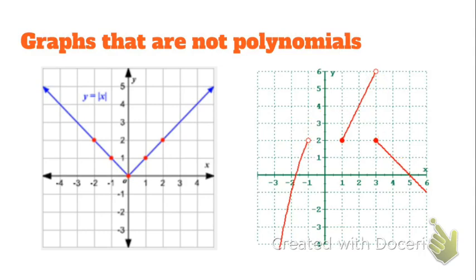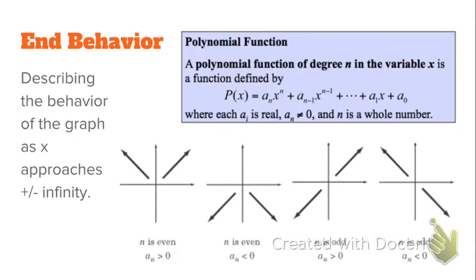We'll look at those more later, but now we want to look at what polynomials are. So first, when we're given an equation, the first thing we want to know is the end behavior. Over in the blue box on the right, that's the definition of a polynomial — a polynomial expression would be all variables raised to integer degrees, or there's a constant term, and all of the coefficients are real.